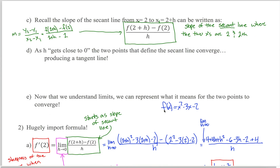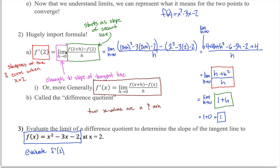This formula down here is kind of amazing. I know I've talked a lot about it already, but I want to talk about it just a little bit more to make sure it makes complete sense. What we did with this formula is we came up with an expression for the slope of the secant line when the two x values were 2 and 2 plus h.